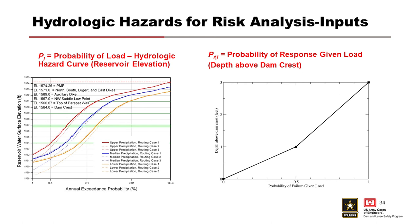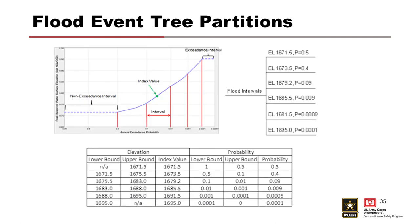With just two slides left, here is how we actually use the hazard information in our risk analysis. On the left we have a stage frequency curve with uncertainty. We use the loading of various stages along with the system response probability — the probability of response given the load — and on the y-axis you have stage, on the x-axis you have probability of failure, and you multiply those times the consequences to get your risk. You also want to partition your flood event tree using your loading curve, looking at different stages and their corresponding probabilities.